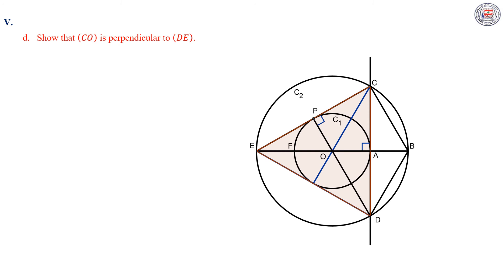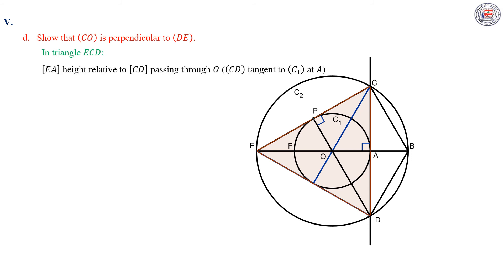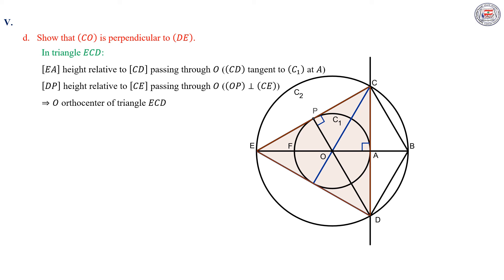In part D, we have to show that CO is perpendicular to DE. In triangle ECD, we have EA as a height relative to CD passing through O, since CD is tangent to the circle C1 at A from the given. And DP is the height relative to CE, since OP is perpendicular to CE. Then O is the orthocenter of triangle ECD. Therefore, CO is perpendicular to DE as it is the third height in triangle ECD.